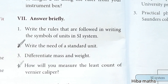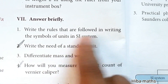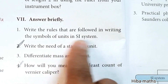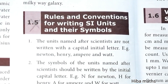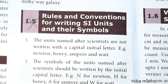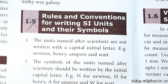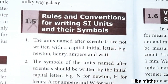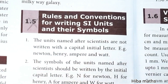Hello students, welcome to Hibamax study time. 9th standard science, lesson 1 - Measurements. Answer briefly: first question - write the rules that are followed in writing the symbols of units in the SI system. The answer is on page number 4, like 1.5 - rules and conventions for writing SI units and their symbols. There are 10 points.